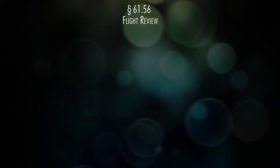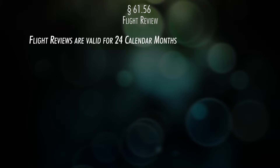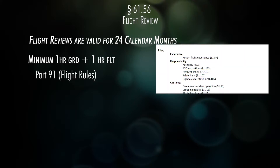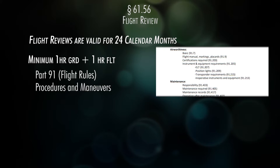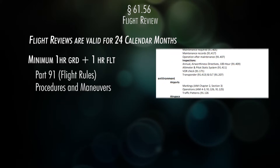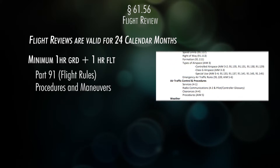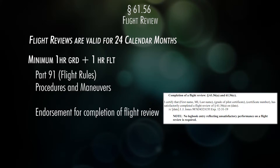Part 61.56 talks about flight reviews. Your license never expires, but to keep it current you have to do a flight review every 24 calendar months. A flight review is a minimum of one hour flight and one hour ground instruction, during which you review Part 91 flight rules and perform maneuvers your instructor deems necessary. If you do a checkride within those 24 calendar months, it resets your flight review clock, giving you 24 more calendar months from the checkride date.